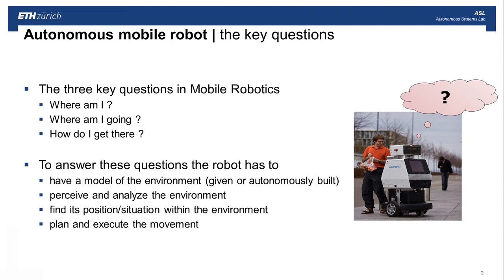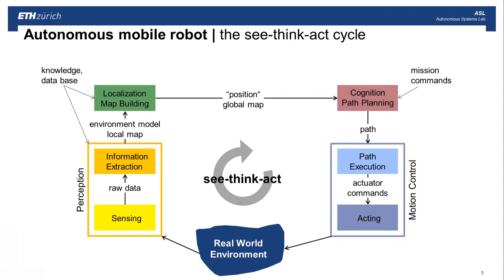In order to address these questions, the robot has to have a model of the environment. This can be automatically built or given a priori by a human. It has to perceive and analyze the environment in order to compare it with the map and find out its position within the environment. And it has to plan and execute the movement. In this course, we will always follow this see, think, act cycle.